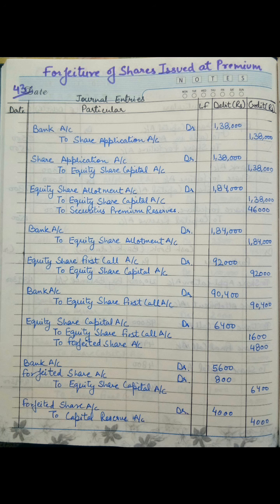Now it's time for calling allotment money. The entry is: Equity Share Allotment Account debit to Equity Share Capital Account and to Securities Premium Reserve. The company asked 1 rupee per share as premium, so 1 into 46,000 equals 46,000 on the credit side for Securities Premium Reserve. The allotment amount called is 1,84,000, calculated as 4 rupees into 46,000. The share capital portion is 1,38,000, that is 3 rupees into 46,000, because there is a premium of 1 rupee.